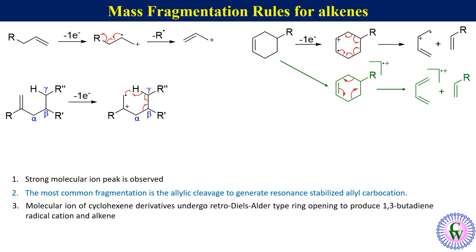At the same time, there is formation of a pi bond between beta and gamma carbons and breaking of the alpha-beta bond to eliminate an alkene and a radical cation. This overall process is called the McLafferty rearrangement.